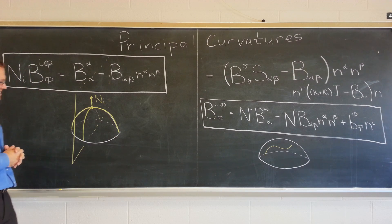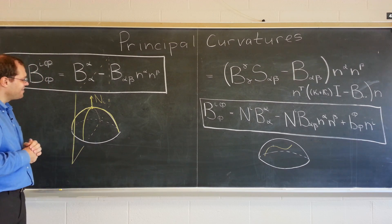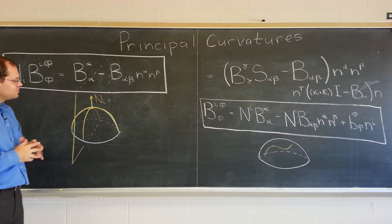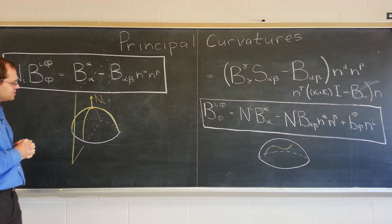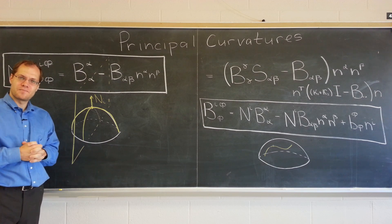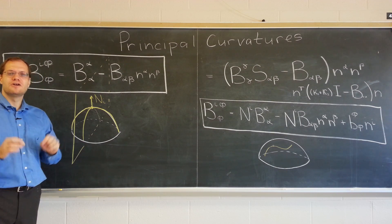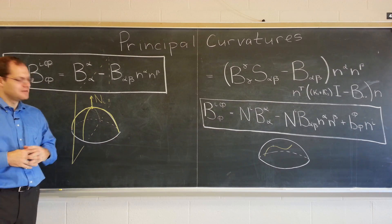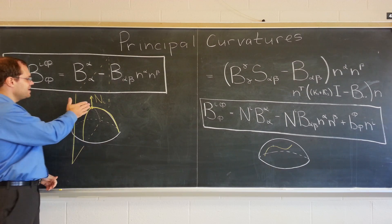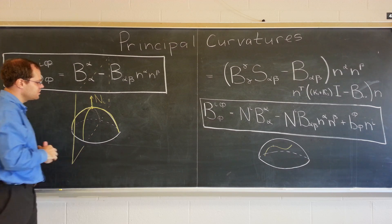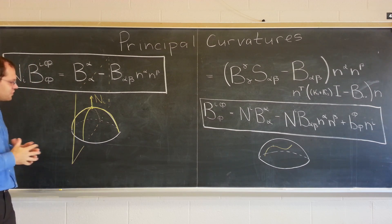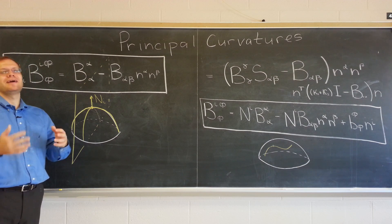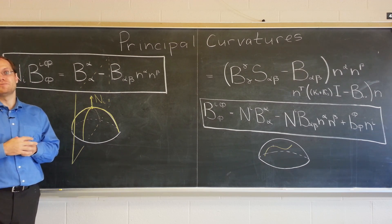What direction gives the largest curvature, and what direction gives the smallest curvature? Those two curvatures are called the principal curvatures. Among all possible slicing planes that contain the normal to the surface, choose the one that delivers the largest curvature and the one that delivers the smallest curvature. That's the definition.